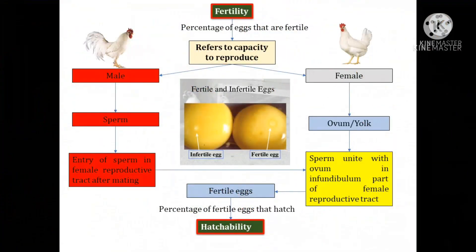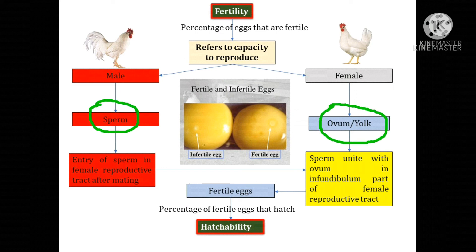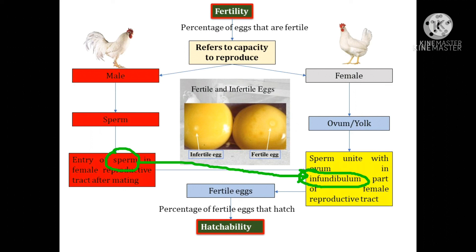The male breeder bird and female breeder bird both contribute equally in reproduction. Sperm comes from the male and the ovum or yolk is released from the female; these unite together and form a zygote. The sperm enters into the female reproductive tract after mating and unites with the ovum in the infundibulum part of the female reproductive tract.